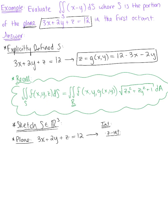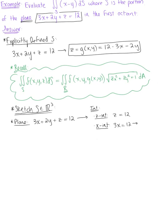For the Z intercept, letting X and Y be 0, we're left with Z equals 12. For the X intercept, letting Y and Z be 0, we have 3X equals 12, so X equals 4. For the Y intercept, letting X and Z be 0, we have 2Y equals 12, so Y equals 6. We'll go ahead and plot these three intercepts on our graph.